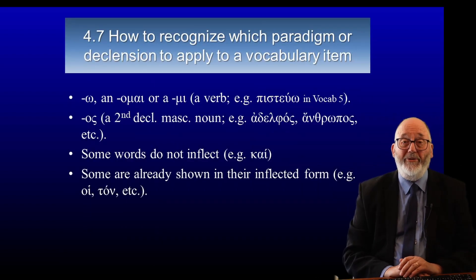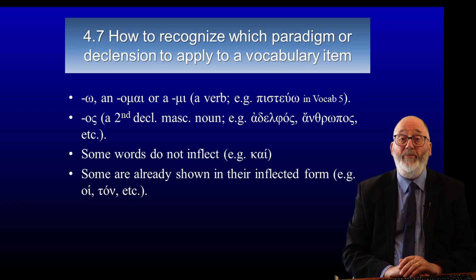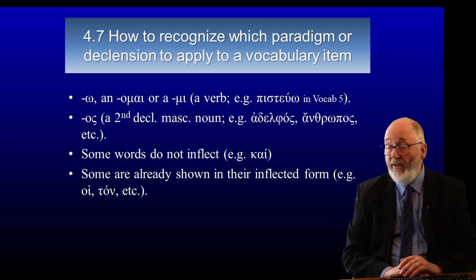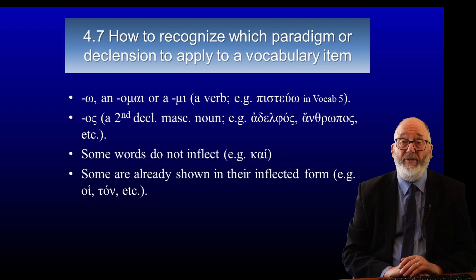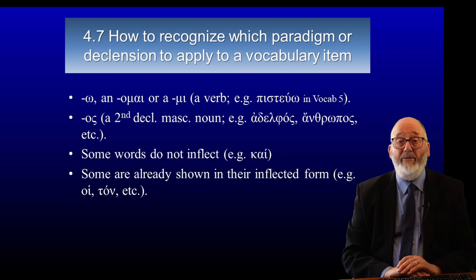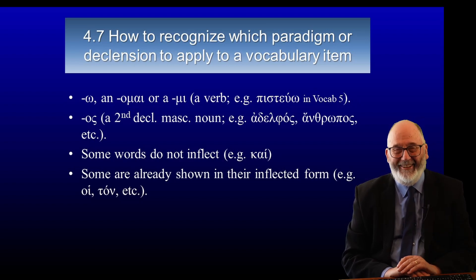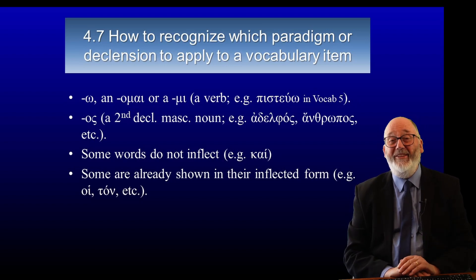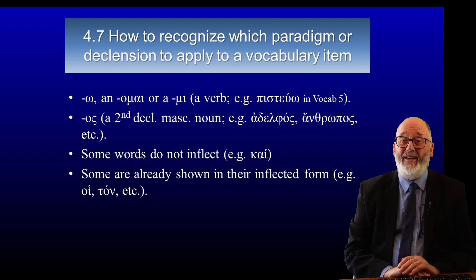Greek provides a help because it lets us know what are verbs and what are nouns. In a vocabulary list, a verb is always going to end with omega, omai, or mi. A masculine second declension noun is always going to end with -os. So if we meet pisteuo, we know it's a verb because it ends with omega. If we meet adelphos, it ends with -os — therefore it must be a noun, and we know it is masculine second declension. Everything you've learned in vocabulary that ends with -os is a masculine second declension noun.